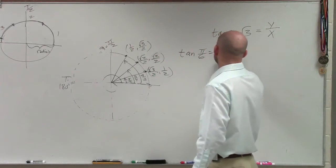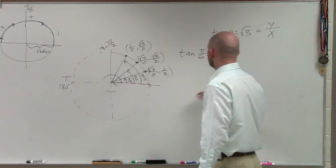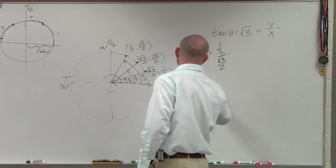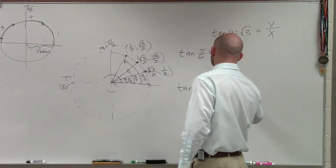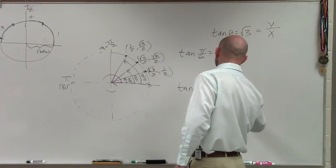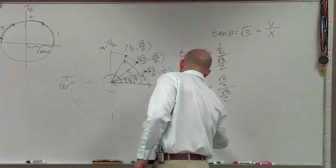So I can do 1 half over square root of 3 over 2. I can do tan of π over 4 equals, which we already did, right? Square root of 2 over 2 divided by square root of 2 over 2. And then I could do tan of π over 3.